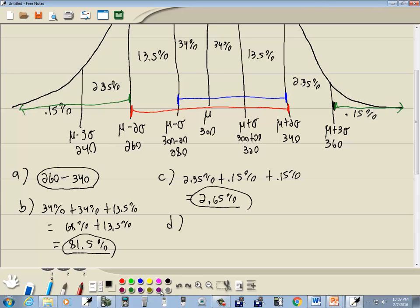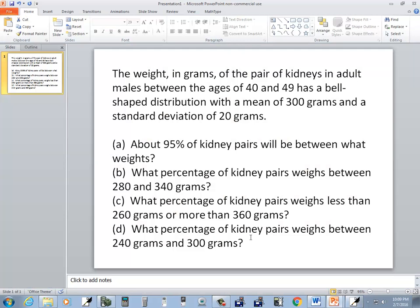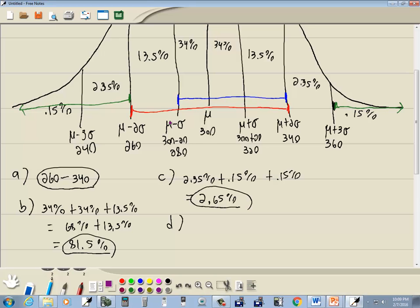And then D, and I'll do that in purple. What percentage of kidney pairs weighs between 240 and 300? 240, here's 240, and 300 is right here. So we're going to add all the percentages between those values. So we've got 2.35 plus 13.5 plus 34%.